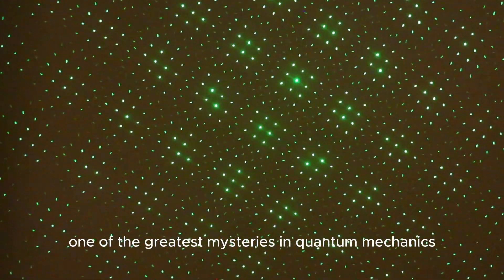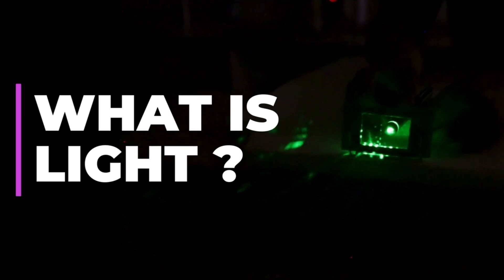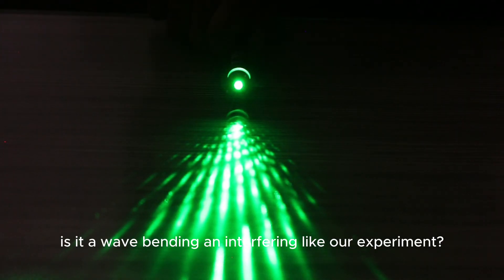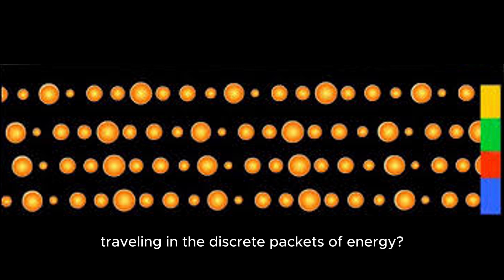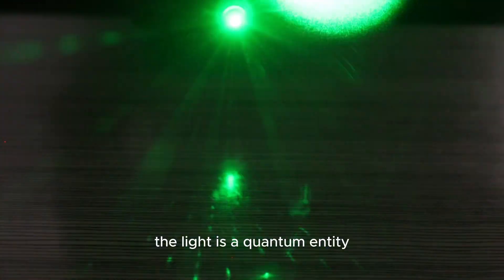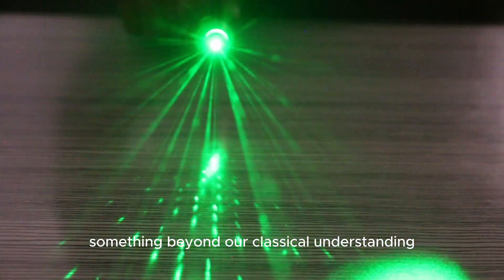This remains one of the greatest mysteries in quantum mechanics. So, what is light? Is it a wave, bending and interfering like our experiment? Or is it a particle, traveling in discrete packets of energy? The answer is both. Light is a quantum entity, something beyond our classical understanding.